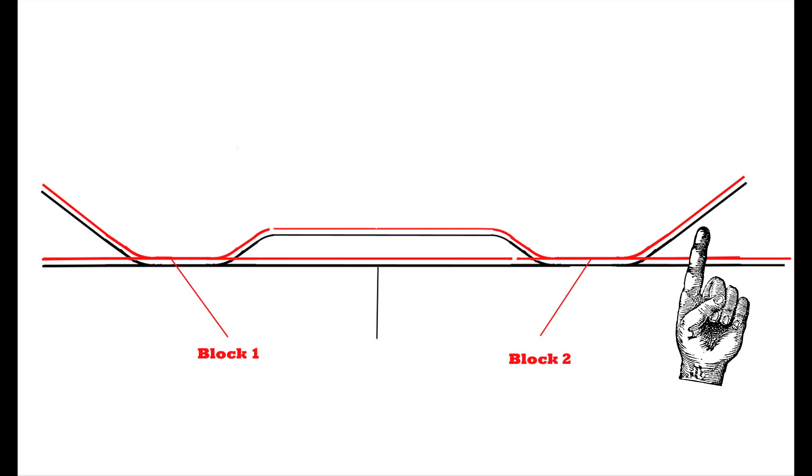This time shoving the set out cars up into the facing point siding and then uncoupling from them and proceeding on eastbound. So this is one of the many things you need to take into account when you're designing your track plan in the first place. Are you going to have a proper run around, a passing track, in order to switch out facing point stub sidings?